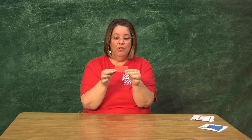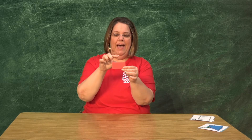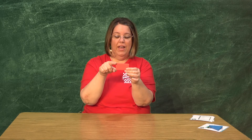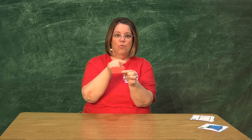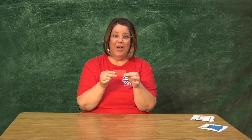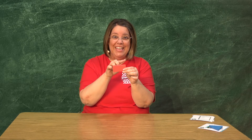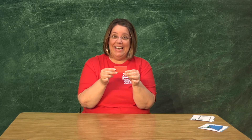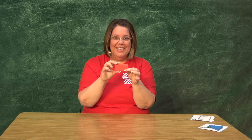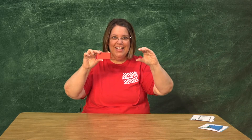Un rectángulo es casi como un cuadrado, pero un poco diferente. Vamos a contar los lados o las líneas de la figura: una, dos, tres, cuatro. ¿Cuántos tiene? Sí, tiene cuatro como el cuadrado. Pero el cuadrado tiene lados que son igualitos de largo. Este no tiene lados que son igualitos de largo. Se ve como un cuadrado que se estiró y se hizo más largo.